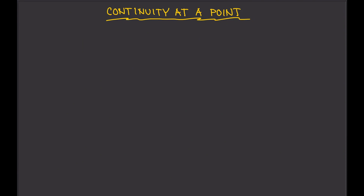In this video, we are going to talk about continuity at a point. So, what is continuity at a point? What does that mean? Continuity at a point is a notion that the function is not broken at that point. Like, if you look at the graph and look at the part of the graph at a certain point, then you should not be able to see any break in there, any hole.